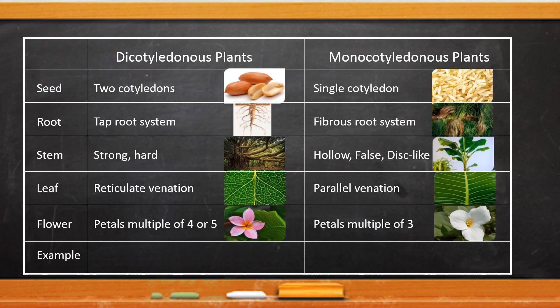Examples of dicotyledonous plants are grapes, sunflower, tomatoes, etc. Examples of monocotyledonous plants are bananas, sugarcane, lilies, etc.